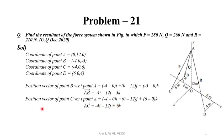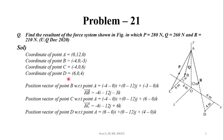And lastly, the position vector of point D with respect to point A. That is D coordinate minus A coordinate: (6 - 0)i + (0 - 12)j + (4 - 0)k. So we get vector AD as 6i - 12j + 4k.